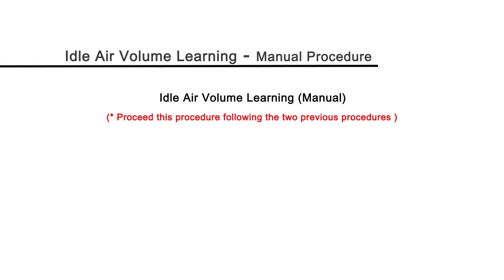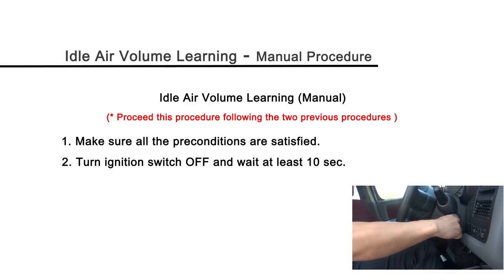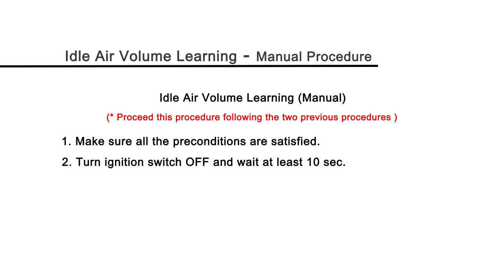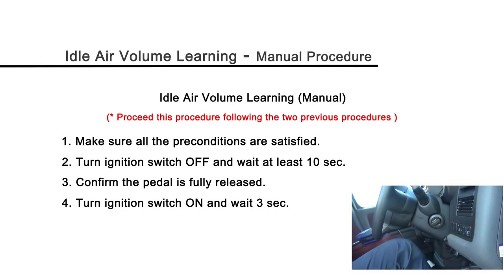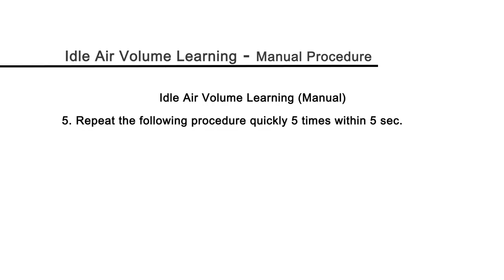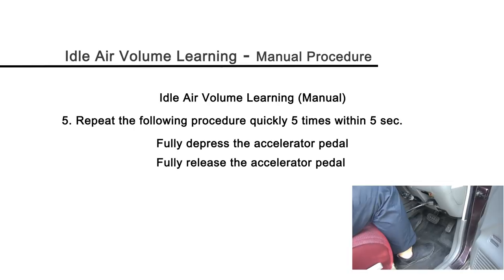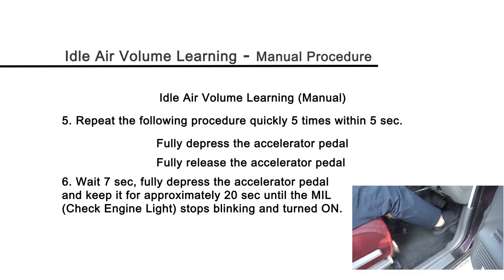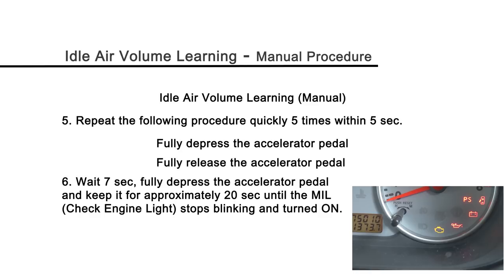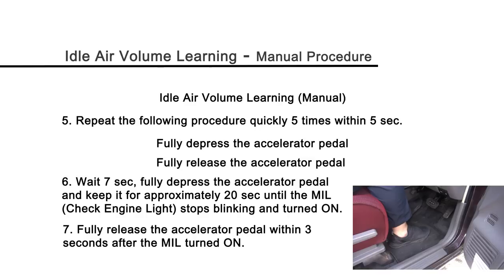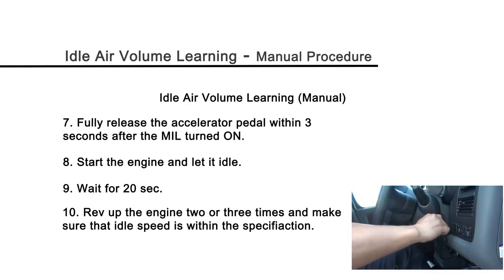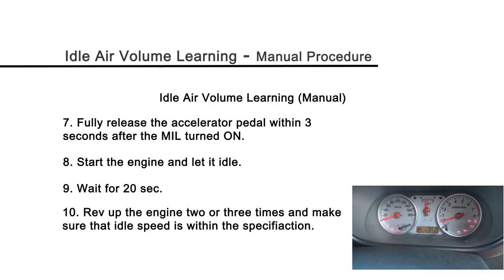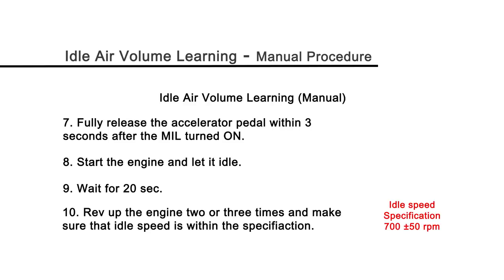For idle air volume learning — manual procedure — make sure all preconditions are satisfied. Turn the ignition switch off and wait at least 10 seconds. Confirm the accelerator pedal is fully released. Turn ignition on and wait 3 seconds. Quickly repeat the following 5 times within 5 seconds: fully depress and fully release the pedal. Wait 7 seconds. Fully depress the pedal and hold it for approximately 20 seconds until the MIL or check engine light stops blinking and turns on. Fully release the accelerator pedal within 3 seconds after the MIL turns on. Start the engine, let it idle, wait 20 seconds, then rev the engine 2 or 3 times and verify idle speed is within specification.